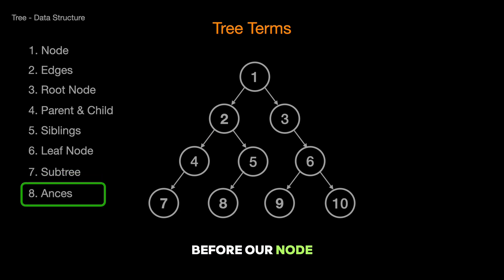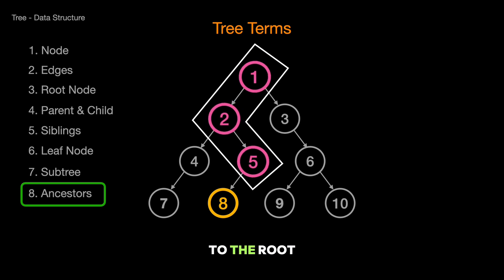And who came before our node? Its ancestors. These are the nodes that came before it, all the way up to the root node. Think of it as climbing your family tree, node by node, back to the origin.